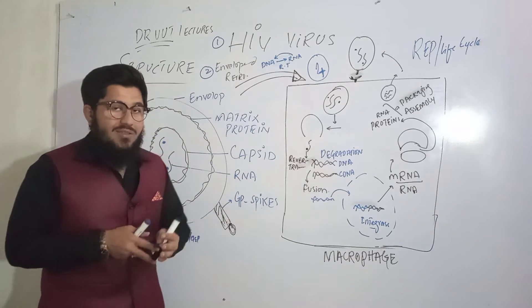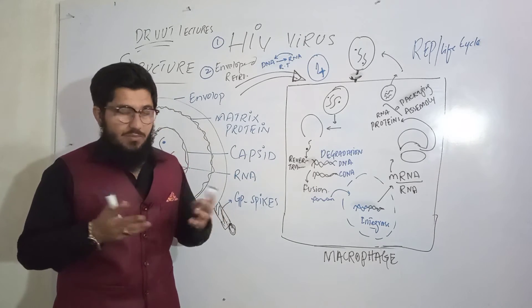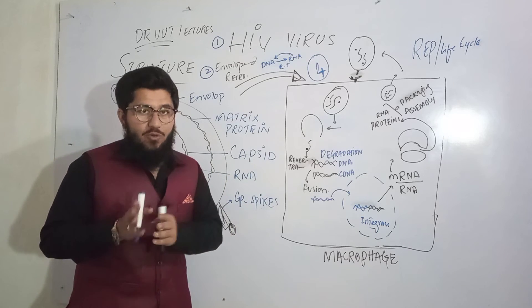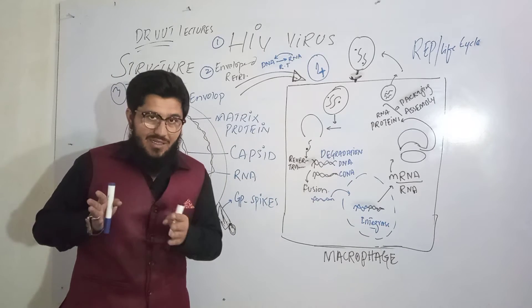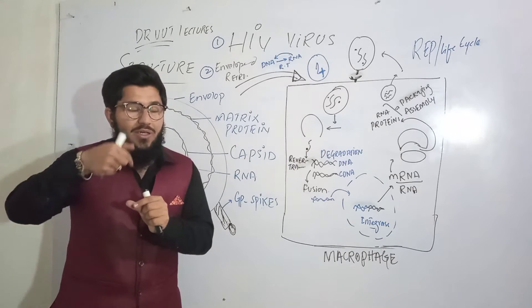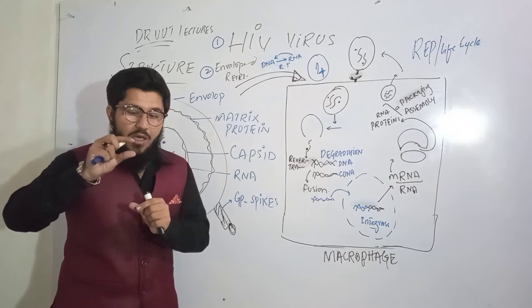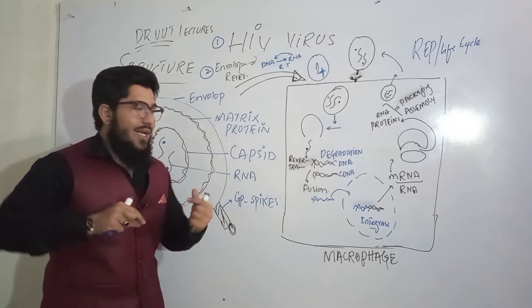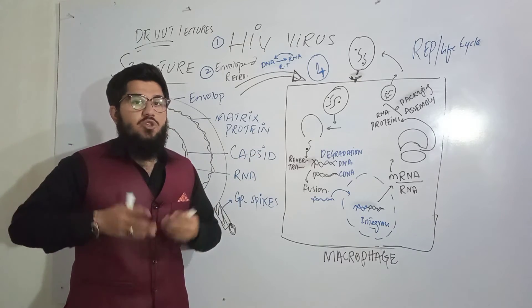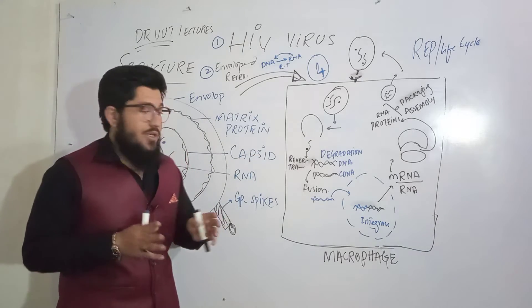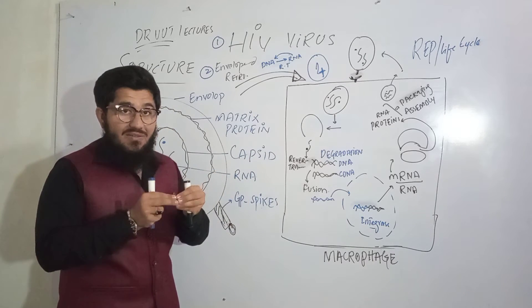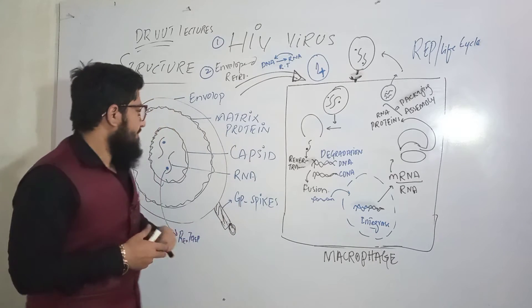Where does the term nucleocapsid come from? RNA is a nucleic acid — we have two types of nucleic acids: RNA and DNA. So RNA is a nucleic acid. Take the term 'nucleo' from nucleic acid and merge it with capsid, and it becomes nucleocapsid — a collective name for the RNA and the capsid.